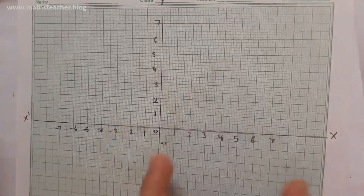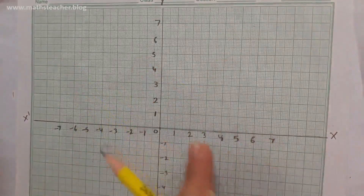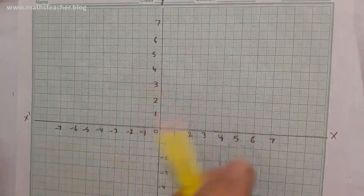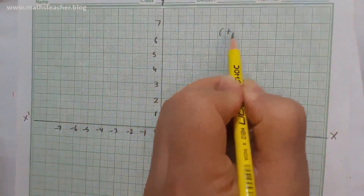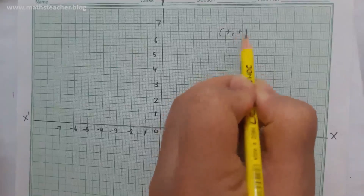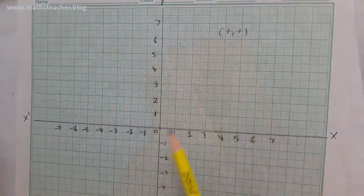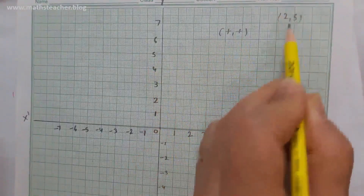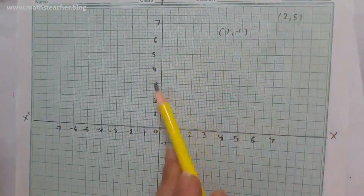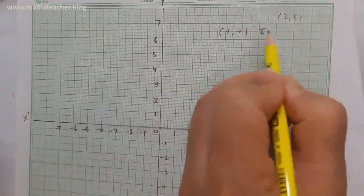Let's talk about the first quadrant. This quadrant is under these two positive lines — both this line and this line are positive numbers. So here both coordinates will be plus and plus, meaning the value of x and y are both positive. For example, (2, 5): both coordinates are positive, so it will be in the first quadrant. And we go anti-clockwise — this is our first quadrant.